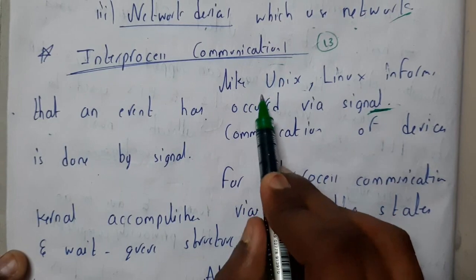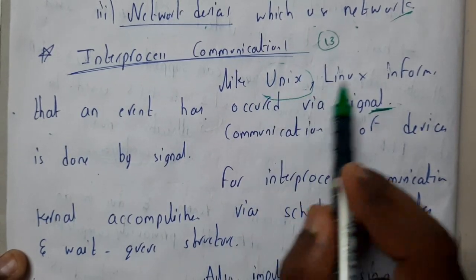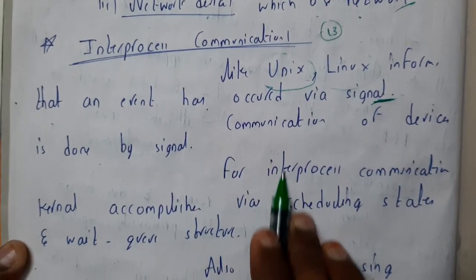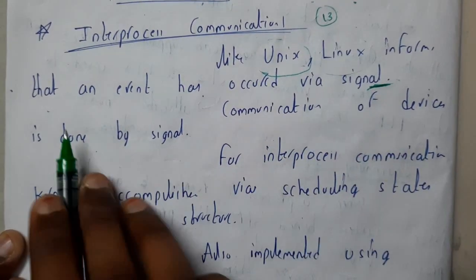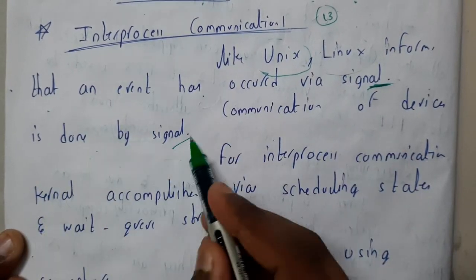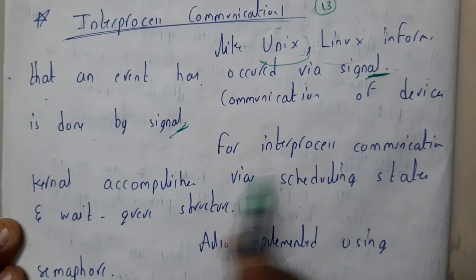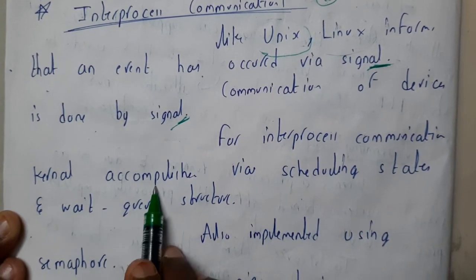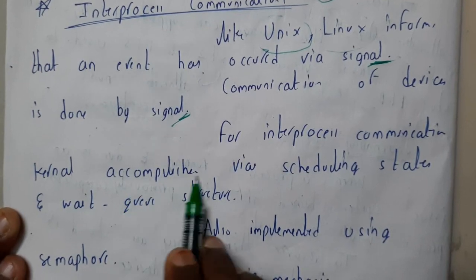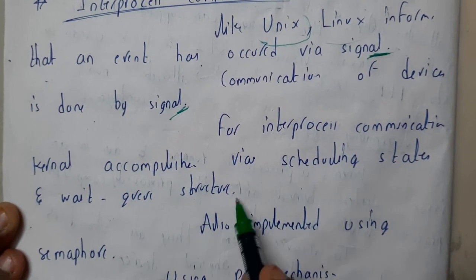Basically in Unix, we will be passing signals indicating whether something is executed or not. In Linux it is the same. So communication of devices is done by signals. For inter-process communication, the kernel accomplishes this via scheduling states and waiting queues.